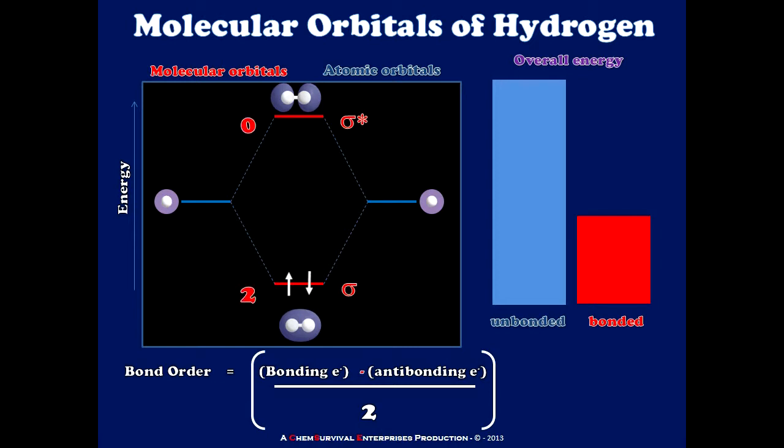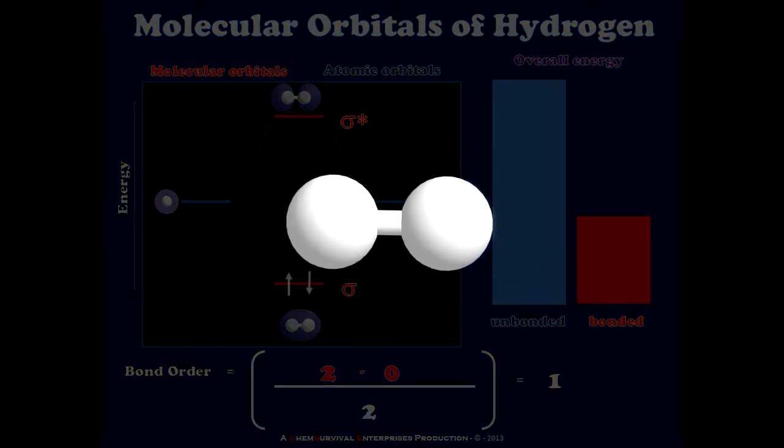So in this case, I have two bonding electrons in the sigma molecular orbital and zero electrons in the antibonding sigma star. Placing these numbers into my equation allows me to predict that my hydrogen molecule will be joined by a single bond. And this is in fact the case.